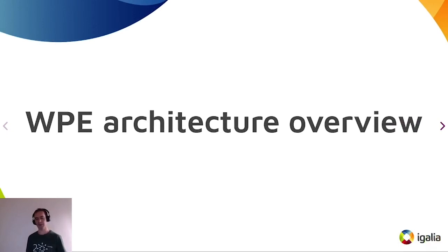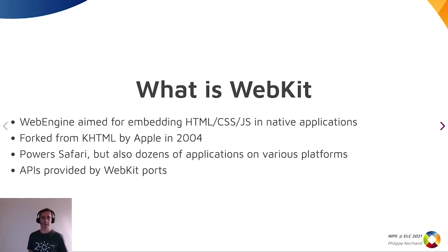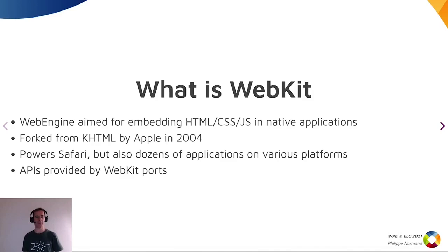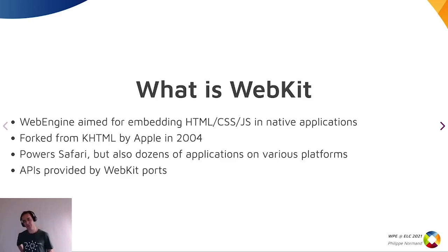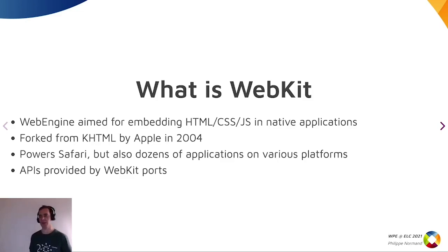Talking about WP architecture: WP is a WebKit port. What is WebKit? It's a web engine that was initially started by the KDE people for a web browser, and then it was forked by Apple and renamed to WebKit, to build their own web browser called Safari. Nowadays it's mainly maintained by Apple and us at EGALIA. WebKit allows you to embed web pages in your application using a widget provided by different kinds of WebKit ports, targeting different rendering systems.